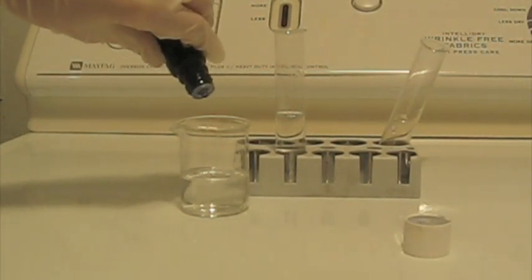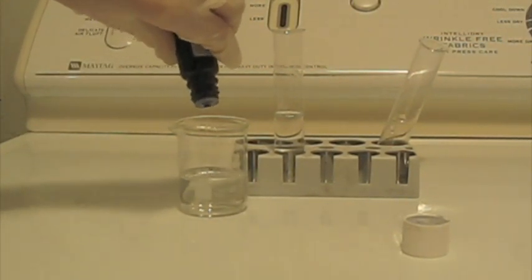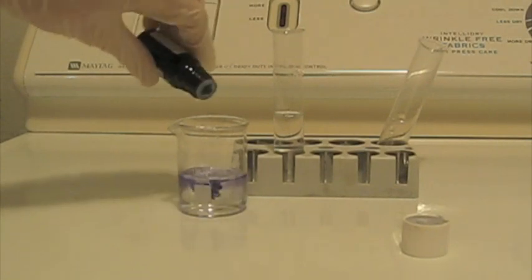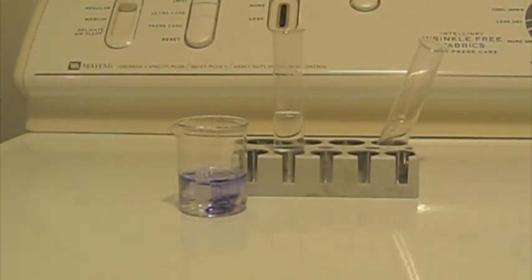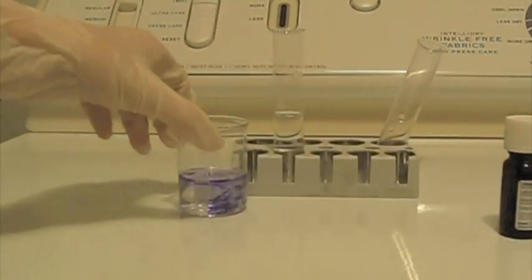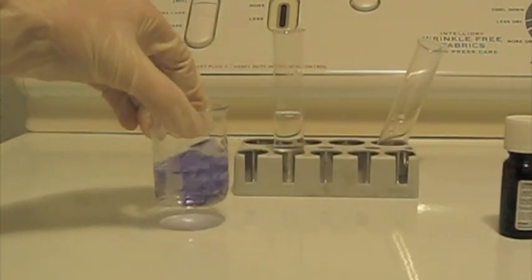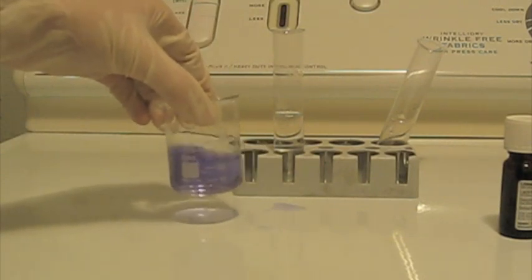To show this, I'm adding some litmus solution to a beaker with water in it. Litmus solution at a pH of neutral is usually purplish blue.